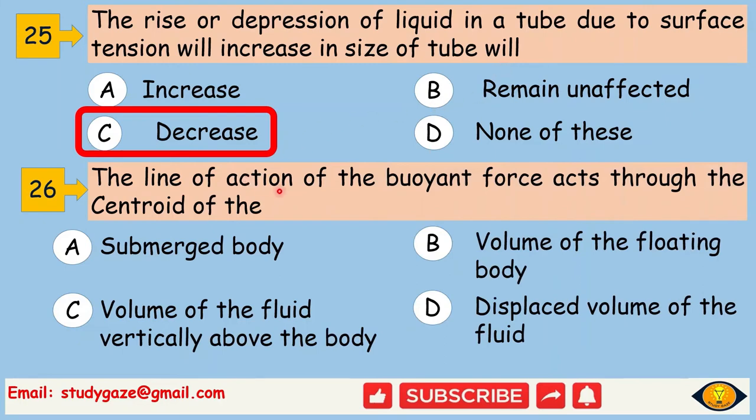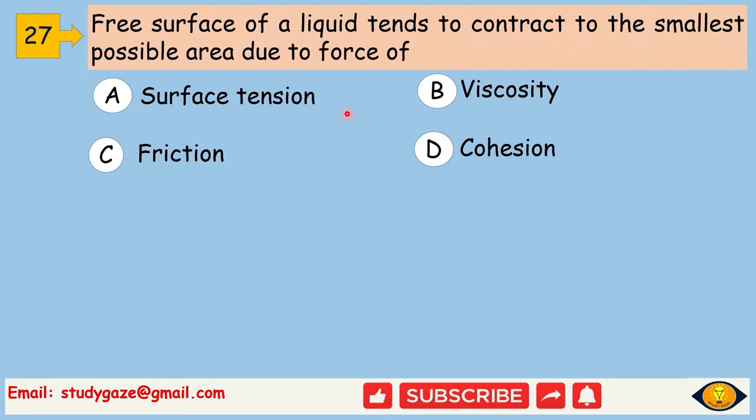The line of action of the buoyant force acts through the centroid of the displaced volume of the fluid. Free surface of a liquid tends to contract to the smallest possible area due to force of surface tension.